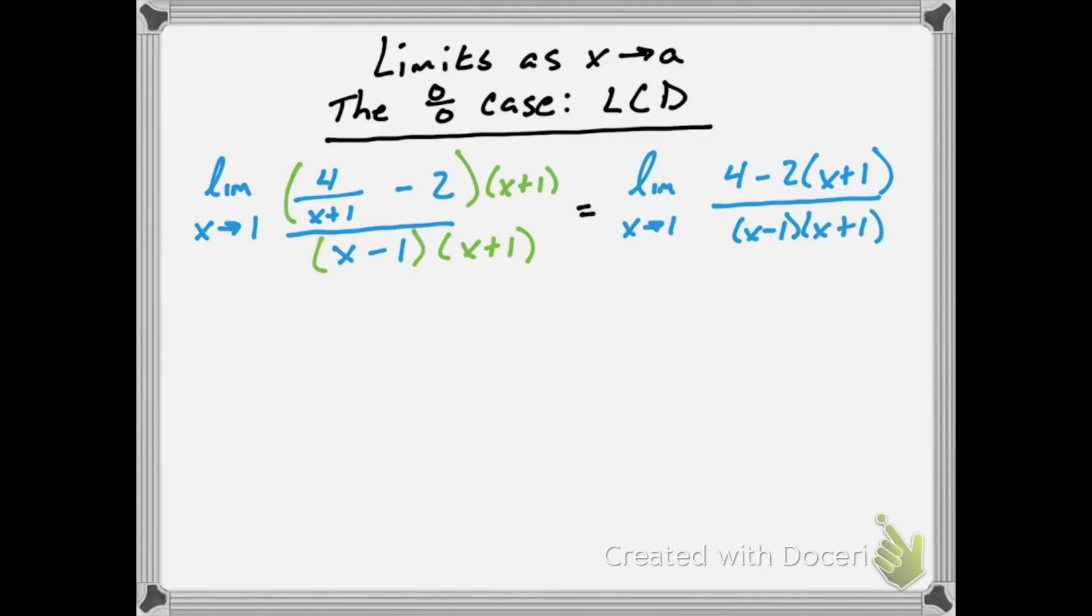If we distribute in the numerator, we'll end up with 4 minus 2x minus 2, however, we can just simplify the 4 minus 2 to end up with 2 minus 2x over x minus 1 times x plus 1.